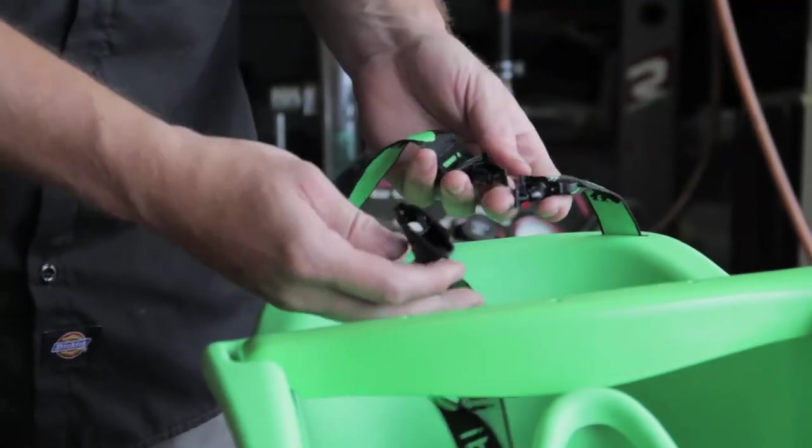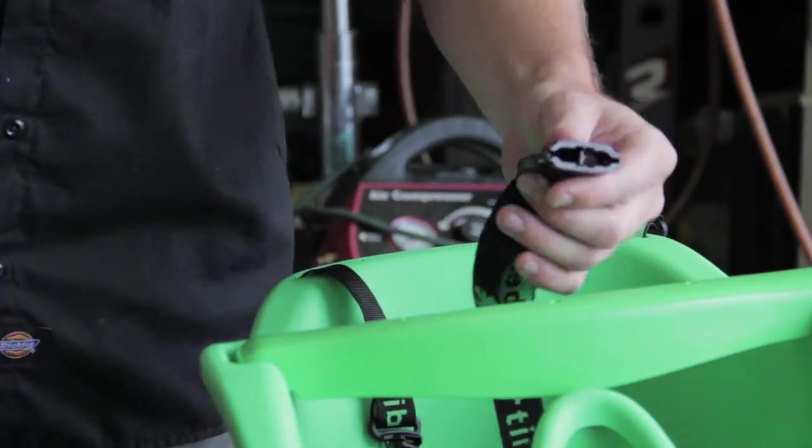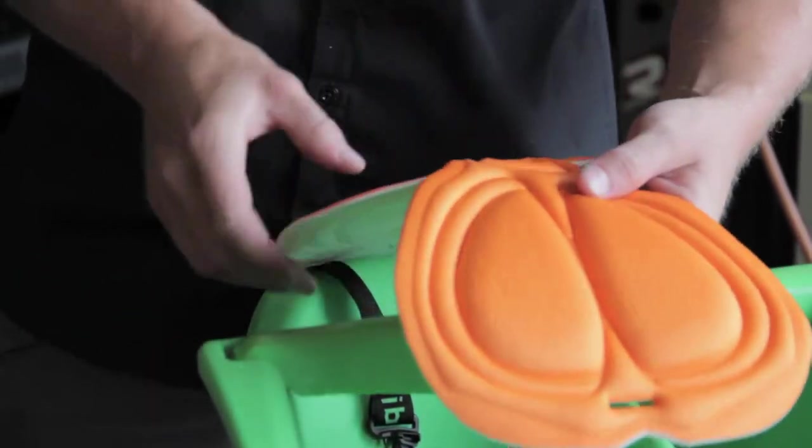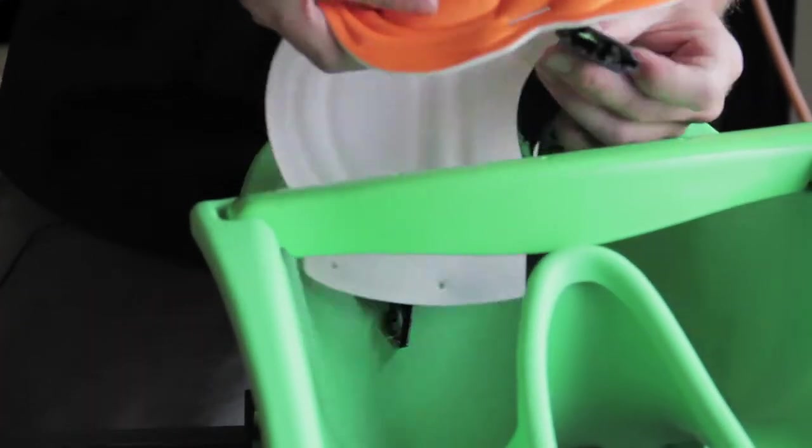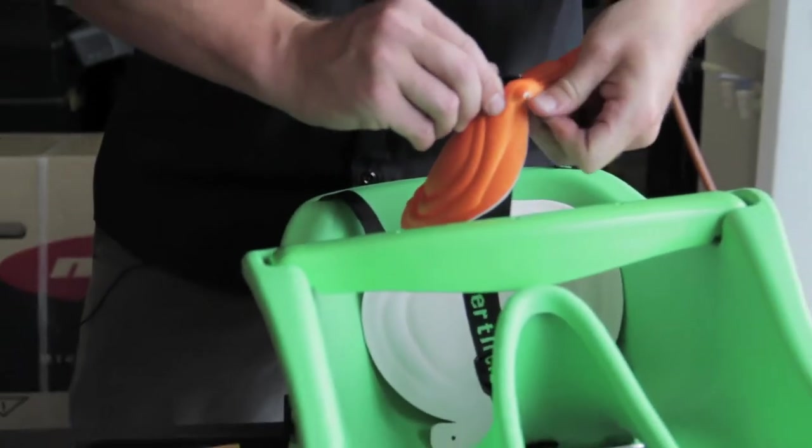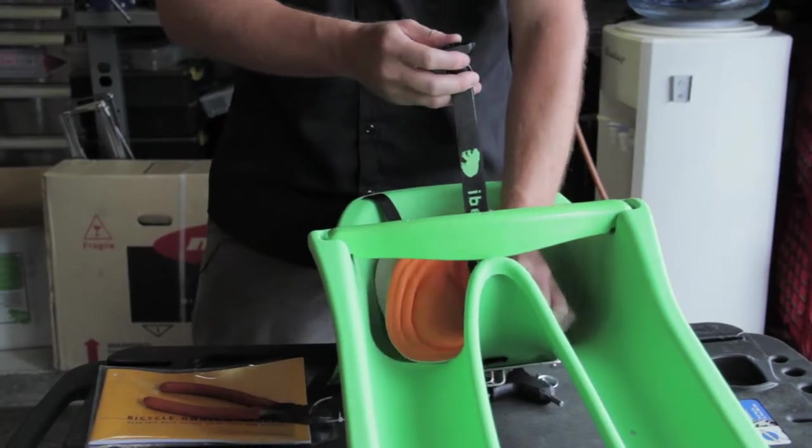So we're going to unclip this. Then we're going to feed the clip through this opening here. One end has three holes in it. The other end has a little slot. The slot is where the strap that goes between the legs feeds through.